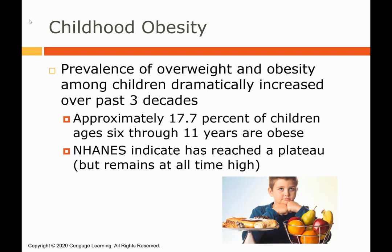Childhood obesity is a major public health issue in the United States. The prevalence of overweight and obesity has dramatically increased over the past three decades. Approximately 17.7% of children ages 6 through 11 years old are obese — nearly one in five children are obese, not just overweight. NHANES indicated that childhood obesity has reached a plateau; however, a plateau means it's still at an all-time high. We still need to see meaningful and statistically significant reductions in obesity.